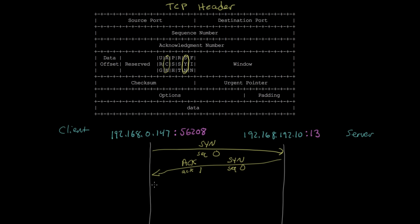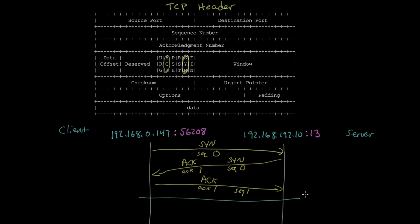Then the client acknowledges that with an ACK with acknowledgement number one, and sets its sequence number to one. There's no data in this packet, so even though the sequence number is one, the server doesn't receive any data and is still expecting the next byte of actual data to arrive with sequence number one. With these three packets back and forth, the connection is established.